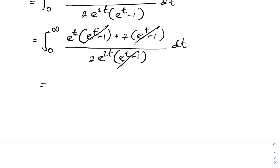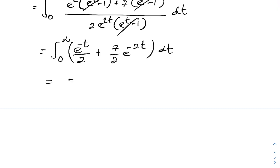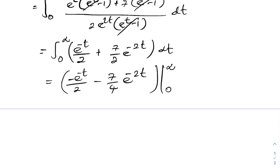Now we have the integral from 0 to infinity of e^t over e^(2t), which equals e^(−t), so we get e^(−t) over 2 plus 7/2 times e^(−2t) dt. Integrating: minus e^(−t) evaluated, minus 7/4 times e^(−2t), with the limit from 0 to infinity. Plugging in the limits gives 1/2 plus 7/4, which simplifies to 9/4. This is the answer. If you like this type of video, please subscribe to this channel. Thank you for watching.